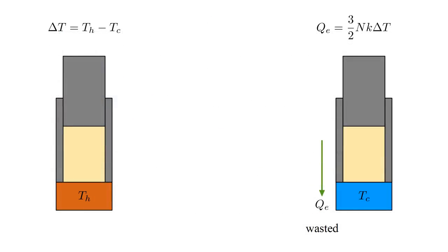The wasted heat is the gas heat capacity, three-halves NK, times the temperature change, delta T. This gets dumped into the cold reservoir. We can never get this back, because heat only flows from hot to cold, and the cold reservoir is the coldest object the gas comes into contact with.